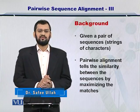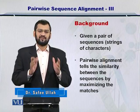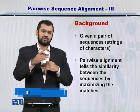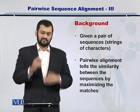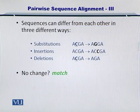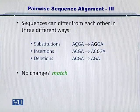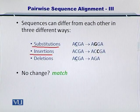Your objective is to maximize the number of matches between the source and the target sequence. Let's review the three sources of differences that can be there in biological sequences. The sequences can differ from each other in three different ways: substitutions, insertions, and deletions.